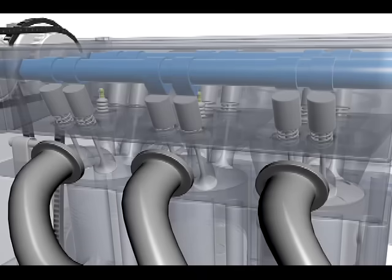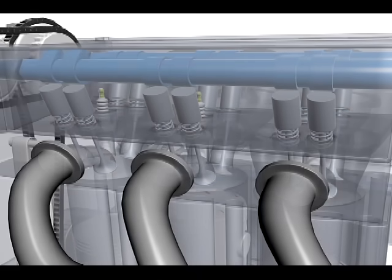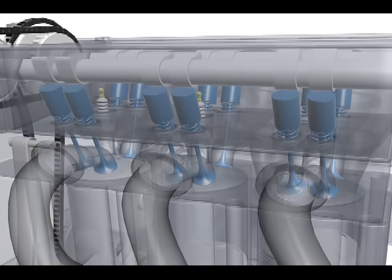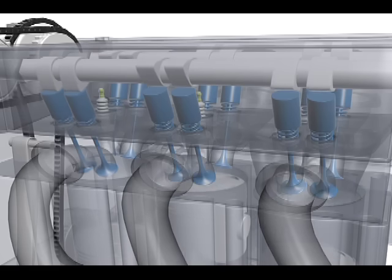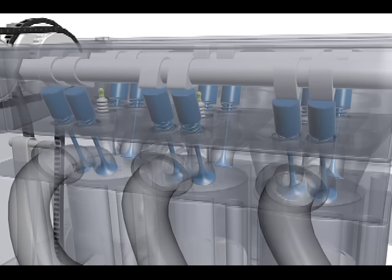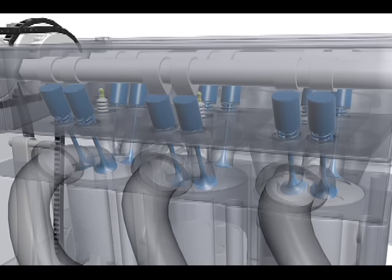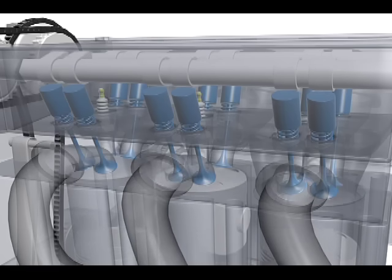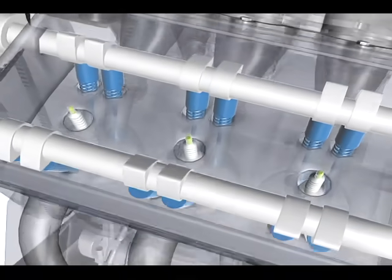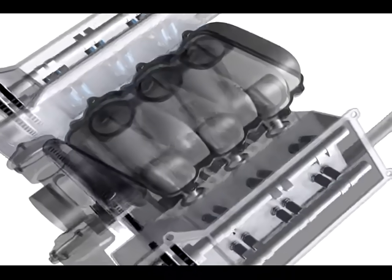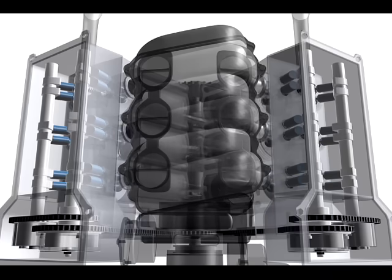Since the power of an engine is determined by how much air and fuel can be burned in a given period of time, Toyota uses four valves per cylinder instead of two or three. This arrangement improves the intake and exhaust performance of the engine over other valve configurations. A 24-valve engine would be a six-cylinder engine with four valves per cylinder.